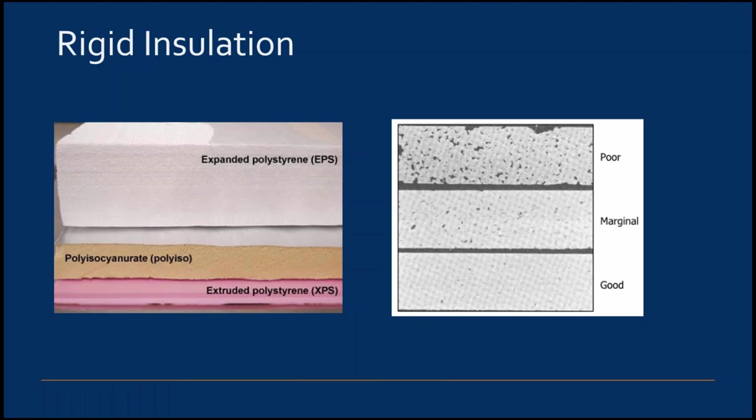The quality of the EPS board is determined by bead fusion, which is critical for performance with respect to water resistance, vapor diffusion, crack resistance, and R-value. The image on the right shows various degrees of bead fusion. For a quick field test, rub your hand across the board — if beads cascade off, it is not well fused and should not be used for the project.